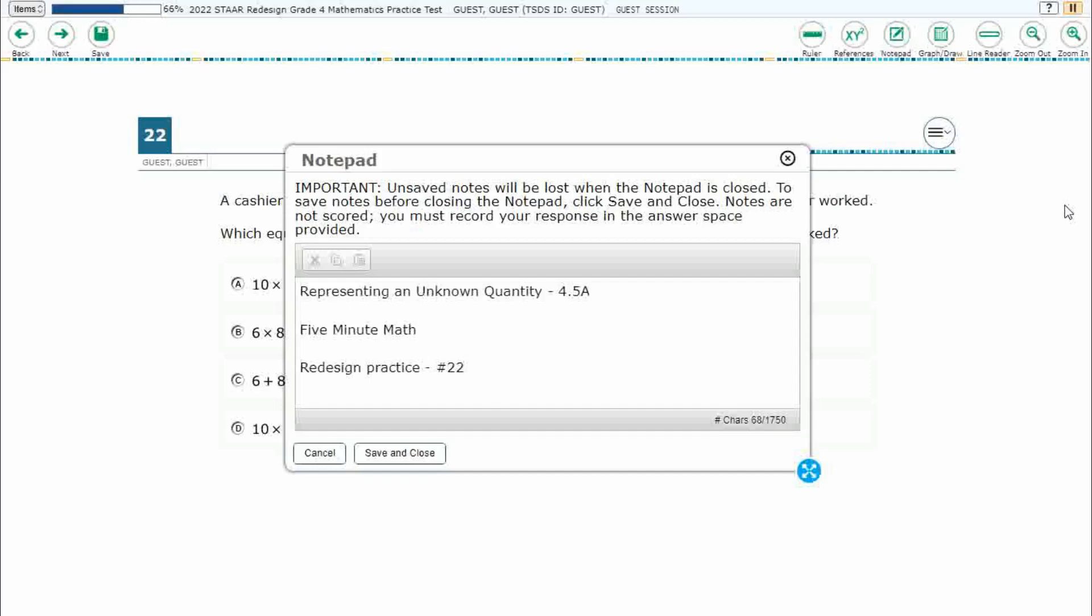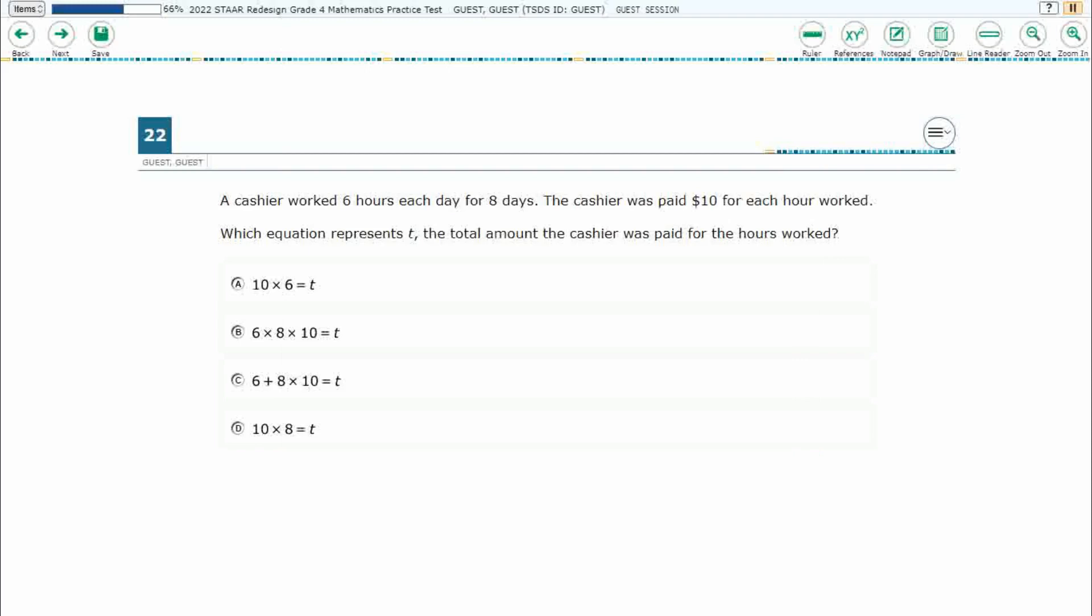Hello and welcome to 5-Minute Math. Today we are looking at the fourth grade concept of representing an unknown quantity. This is standard 4.5a in the great state of Texas and we are using item number 22 of the redesigned practice online star test.